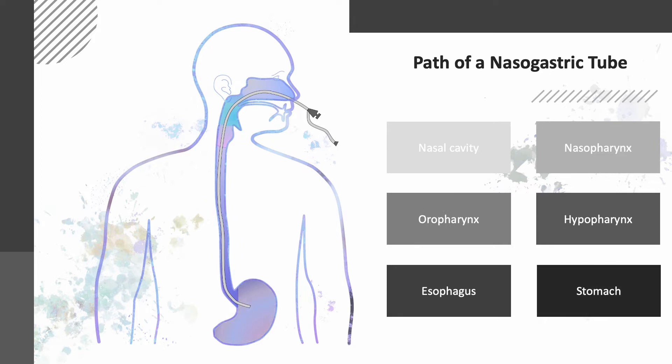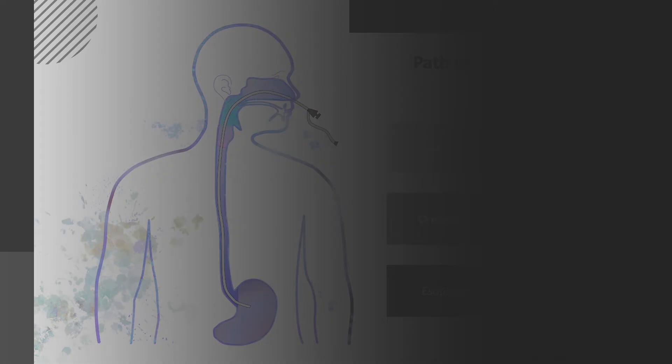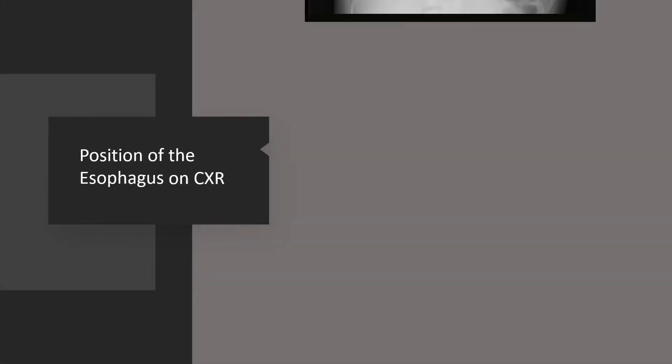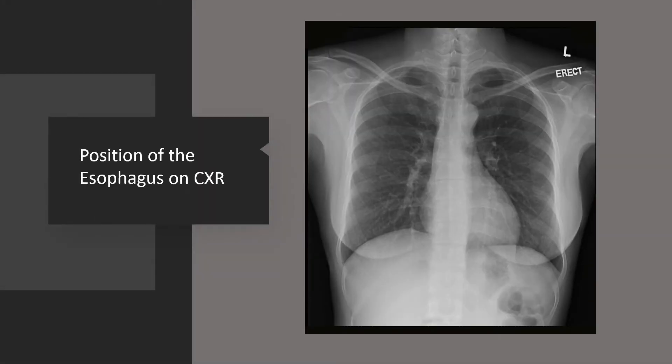A chest x-ray images the nasogastric tube as it passes vertically down the esophagus into the stomach. As the esophagus is not visible on a chest x-ray, it is essential to have an understanding of the normal anatomical position of the esophagus in relation to other visible structures to allow us to know where the nasogastric tube has been placed.